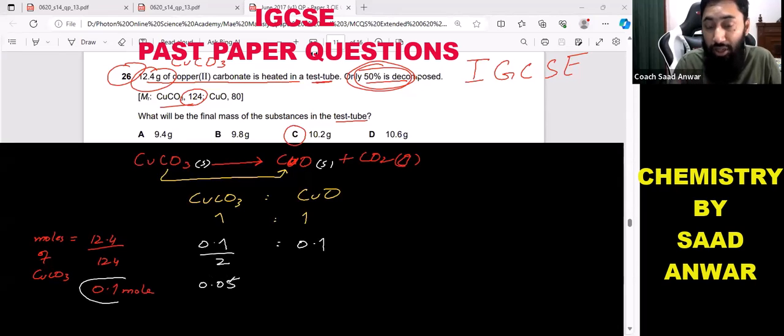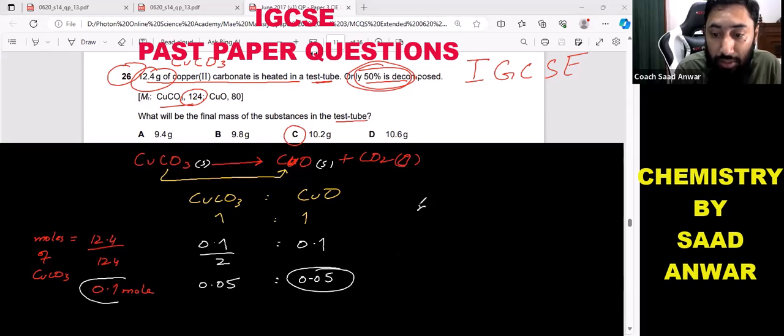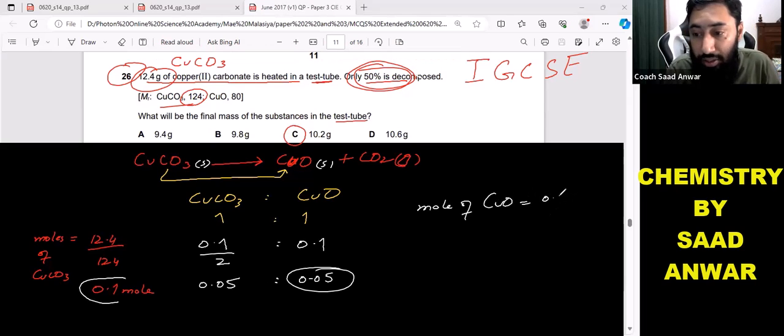So when copper carbonate which is decomposed is 0.05, then obviously copper oxide which will be produced will be 0.05. So this is the moles of copper oxide. Now I can convert this into mass of copper oxide.